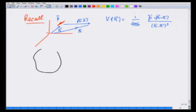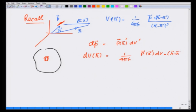If I have a distribution, the dipole moment of this small volume is going to be the polarization density p times dv prime at r prime. The potential infinitesimal potential due to this is going to be 1 over 4πε₀ times p(r prime) dv dot (r minus r prime) divided by |r minus r prime|³.